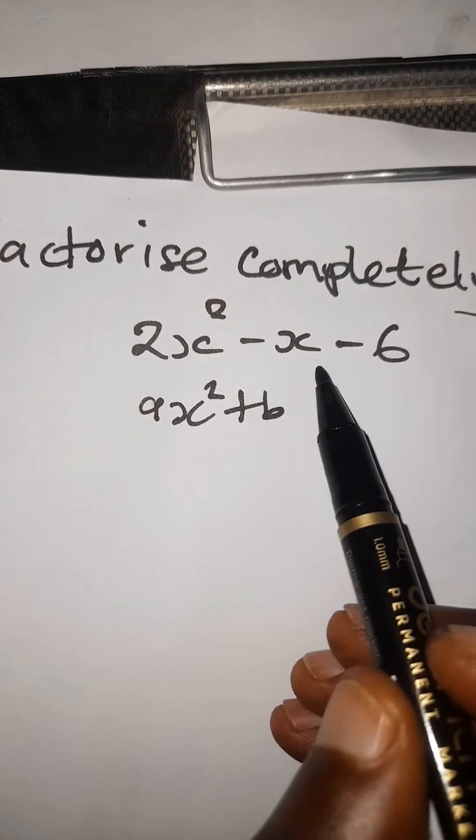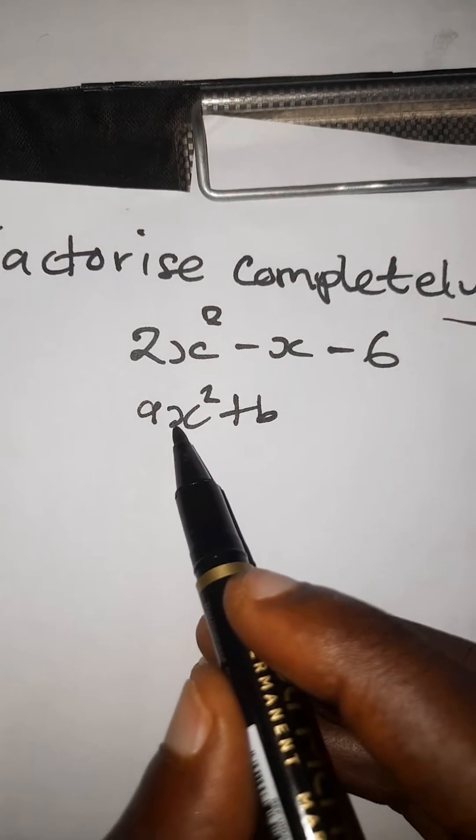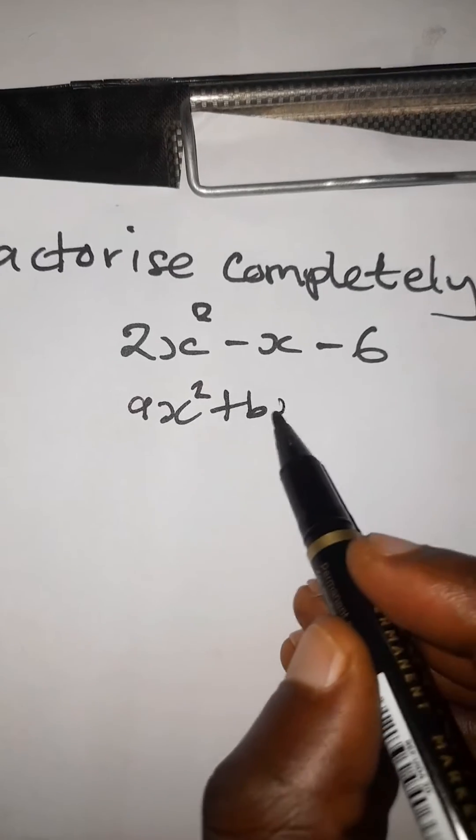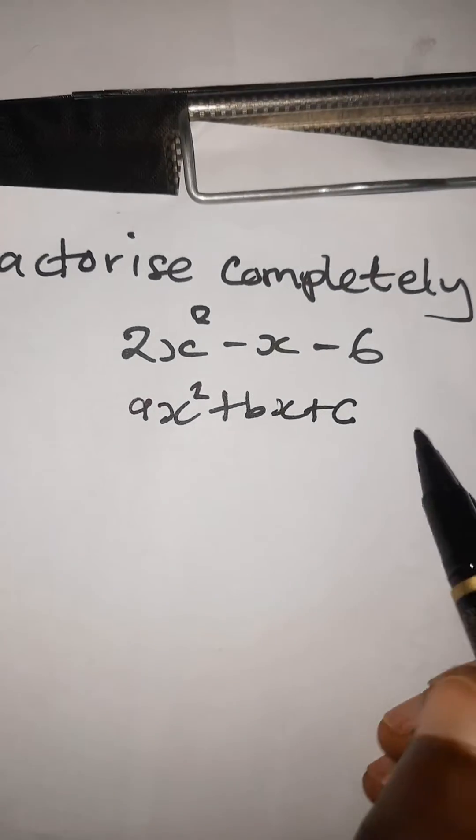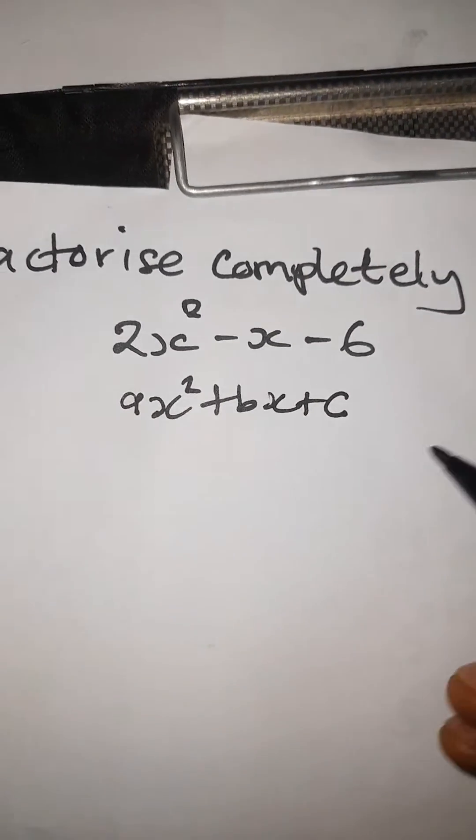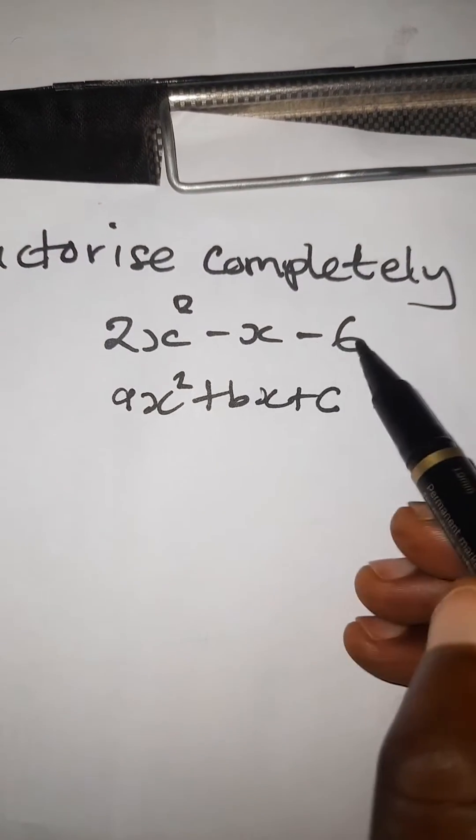To factorize this equation, you need to know the original format which is ax squared plus bx plus c. In this case, the value of a is 2, the value of b is negative 1, and c is negative 6.